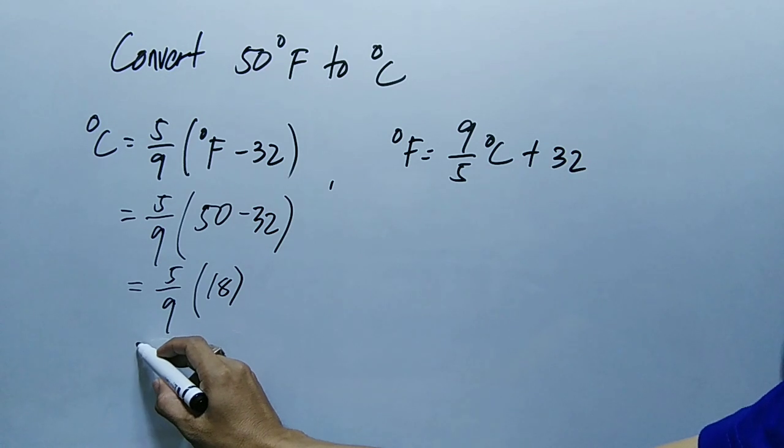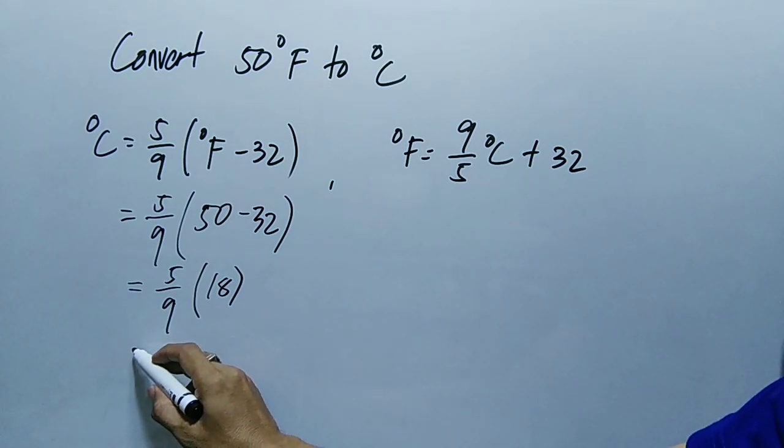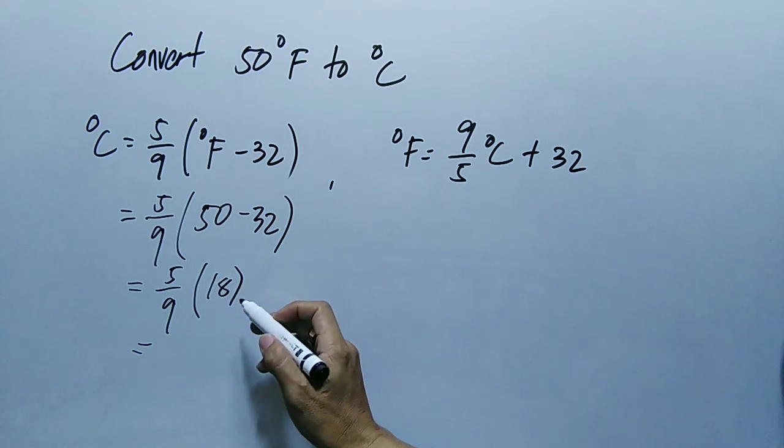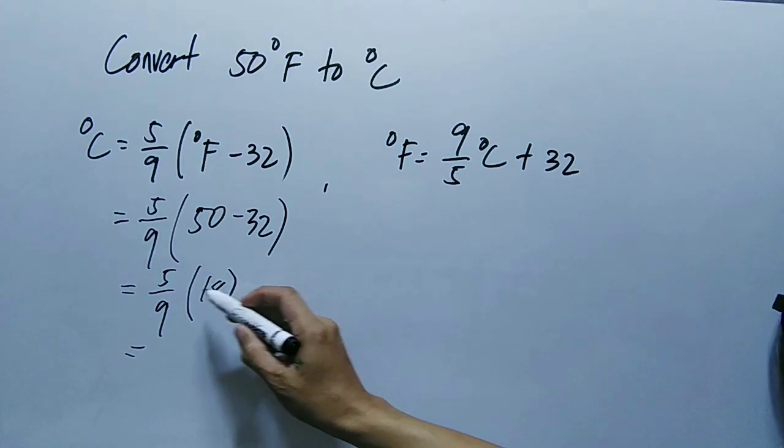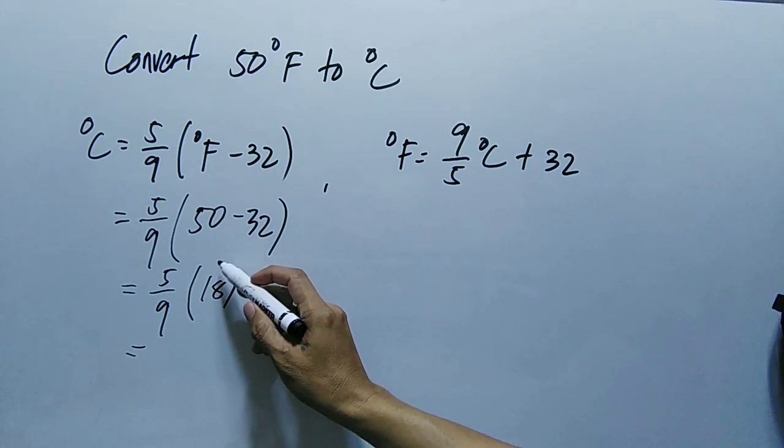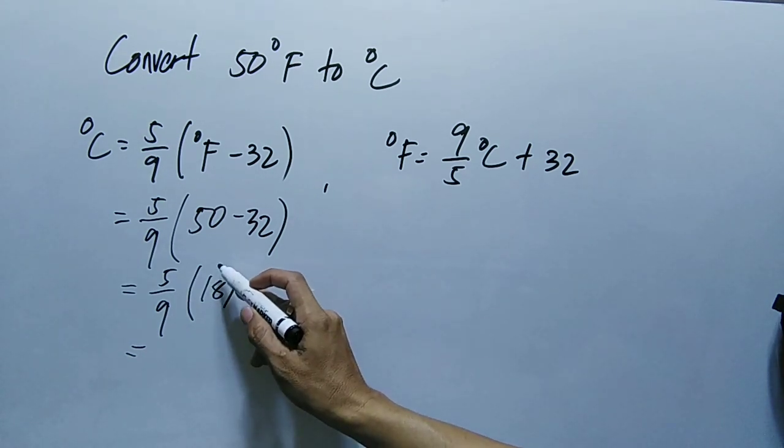Then equals 5 times 18, that is equal to 90. 5 times 8 is 40, then carry 4, 5 times 1, 5 plus 4, 90.